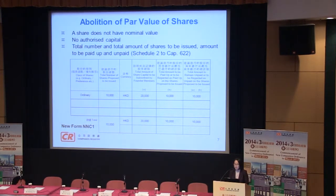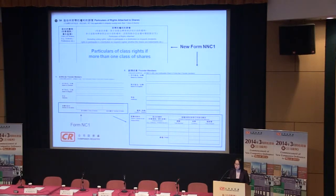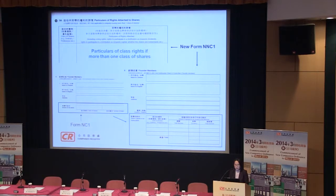Regarding abolition of par value in NNC: without par value, a share does not have a nominal value and there is no authorised capital. So you just need to state the class of shares, total number of shares proposed to be issued, total amount of share capital subscribed by founder members, and whether they have been paid up or not. If the company issues more than one class of shares, in the newly added section 5A, they must list out the relevant rights. If you only issue one class of shares, you don't need to fill in that part.